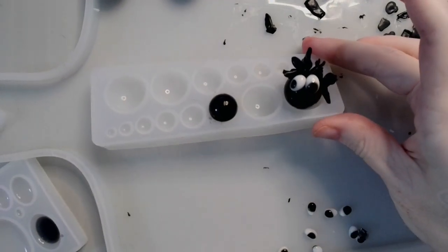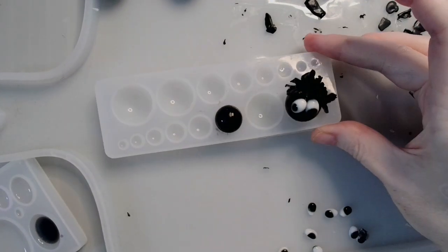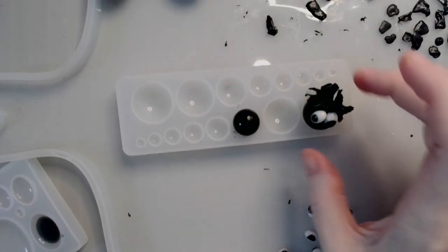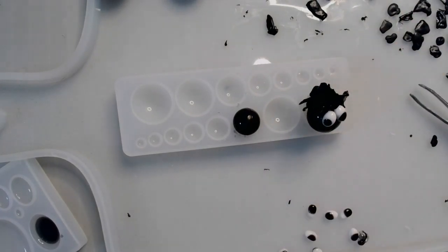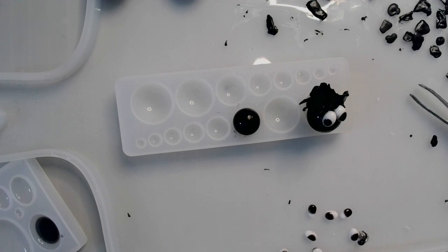All right, you can see the little guy is starting to take shape. So I'm going to let this cool off a little bit because the UV resin does have a tendency to get a little bit warm, so I'm going to let it just sort of settle for a little bit, and then I will get started on the next part of our dust bunny. See you soon.